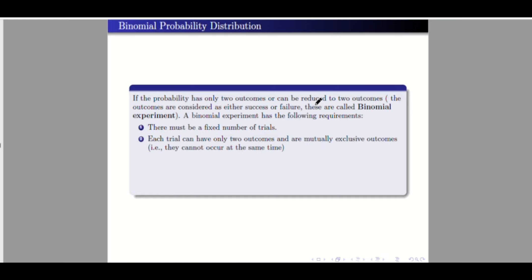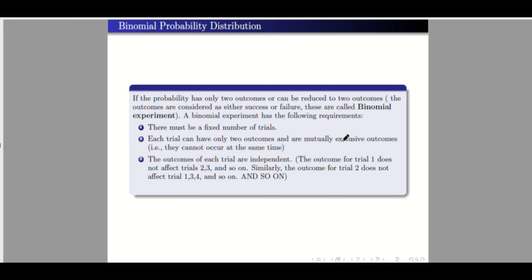Each trial can only have two outcomes — for example, head or tail, approve or disapprove, like or dislike, true or false. The outcomes must be mutually exclusive.